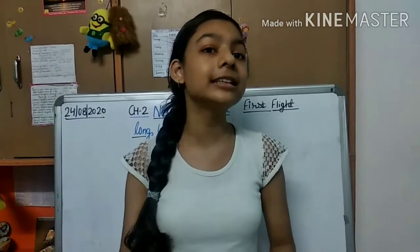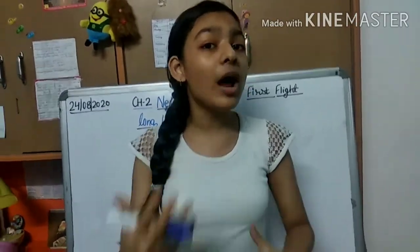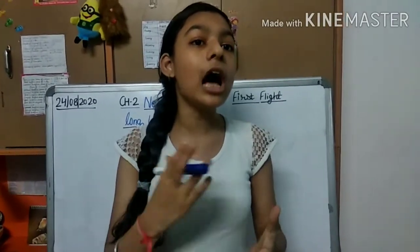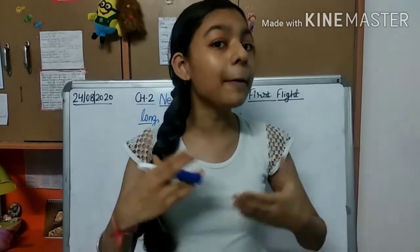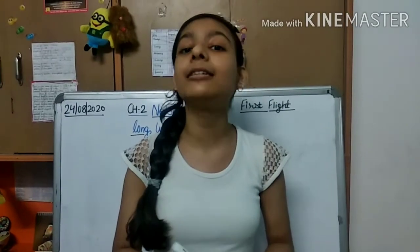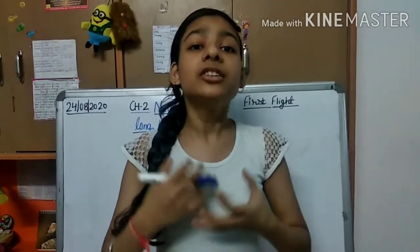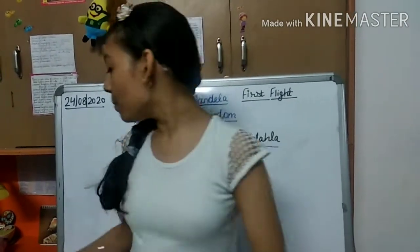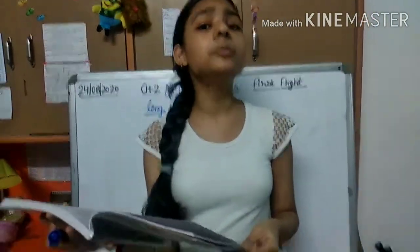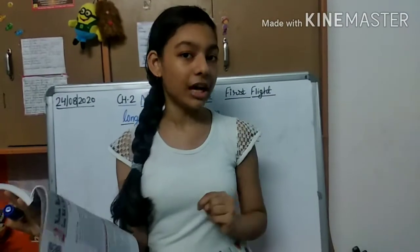Today we are going to learn about this chapter. In this chapter, Nelson Mandela has tried to tell all of us what the difficulties were in liberating the people of South Africa from this crucial apartheid system, and what struggles he made for this great freedom. Mandela became South Africa's first black president, as we all know. He was the first black president of South Africa.